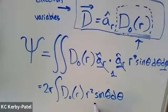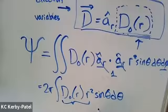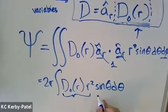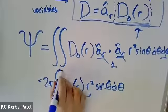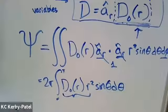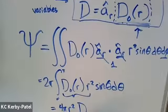Nothing in here depends on theta except for this sine theta, and we already know from doing it a couple times in multiple classes that the integral from zero to pi of sine theta d theta gives us a factor of two. So this whole thing works out to be four pi r squared times d naught.